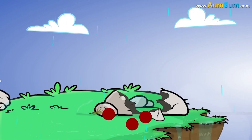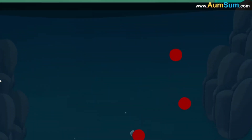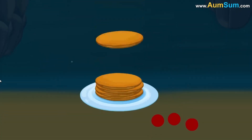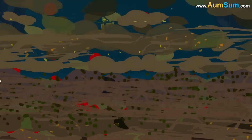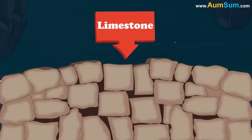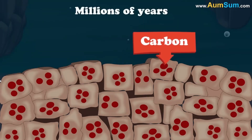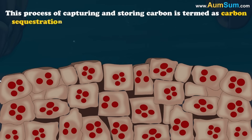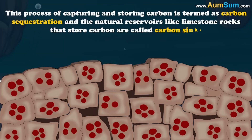Due to erosion, these carbonates are washed into the oceans. They get deposited and start settling at the bottom of the ocean. Over time, just like a stack of pancakes, several layers of sediment accumulate on the sea floor. When conditions are suitable, large deposits of this sediment convert into rocks like limestone. Formation of such limestone rocks isolates or sequesters carbon for millions of years. This process of capturing and storing carbon is termed carbon sequestration, and the natural reservoirs like limestone rocks that store carbon are called carbon sinks.